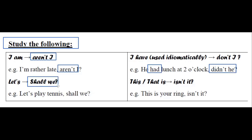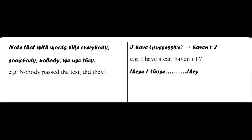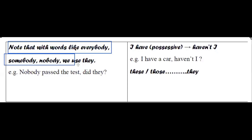'Let's' becomes 'shall we?' — for example, 'Let's play tennis, shall we?' 'This' or 'that' becomes 'it' — for example, 'This is your ring, isn't it?' Note that with words like everybody, somebody, nobody, we use 'they' — for example, 'Nobody passed the test, did they?'